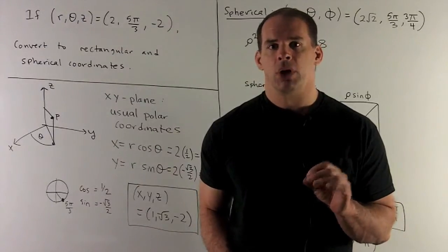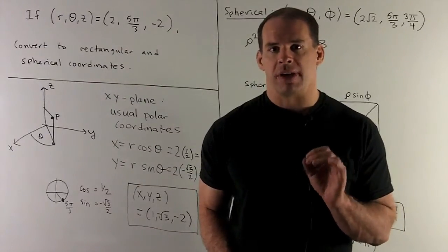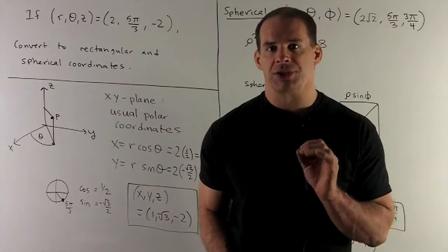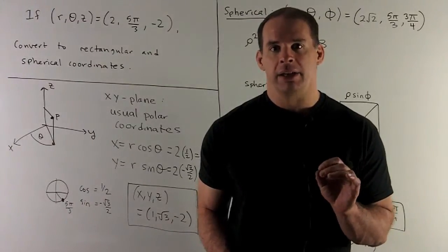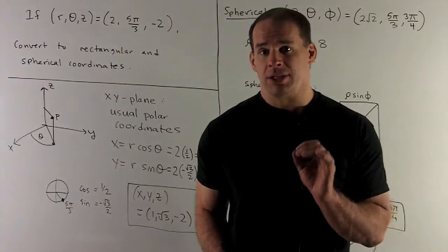Suppose we have the cylindrical point r equals 2, theta equals 5 pi thirds, z equals minus 2. Find the rectangular and spherical coordinates.